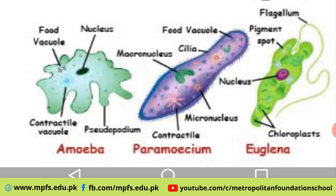For examples of multicellular organisms, first of all there are human beings — that is, we ourselves. Besides that, cat, parrot, dog, fish — all these animals are multicellular. If we take plants, plants are also multicellular, because they have flowers, leaves, and roots.